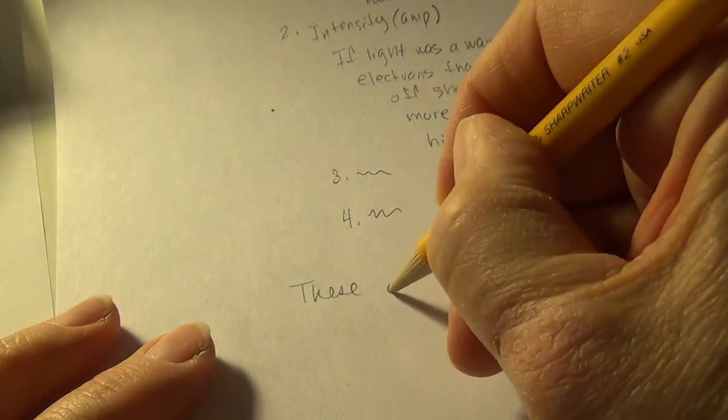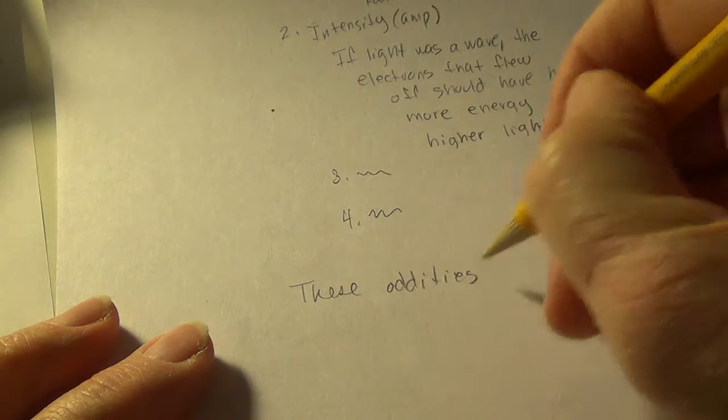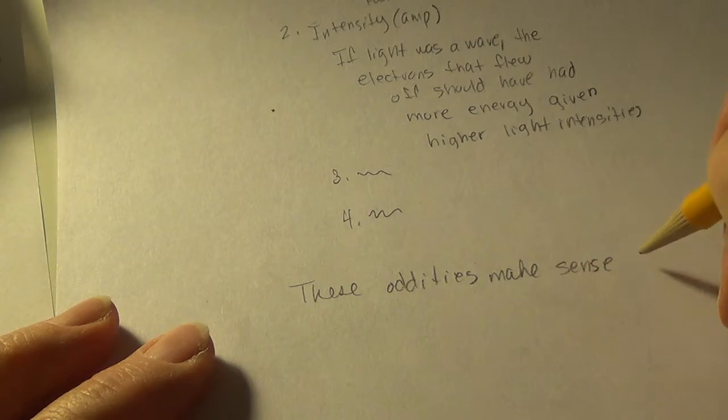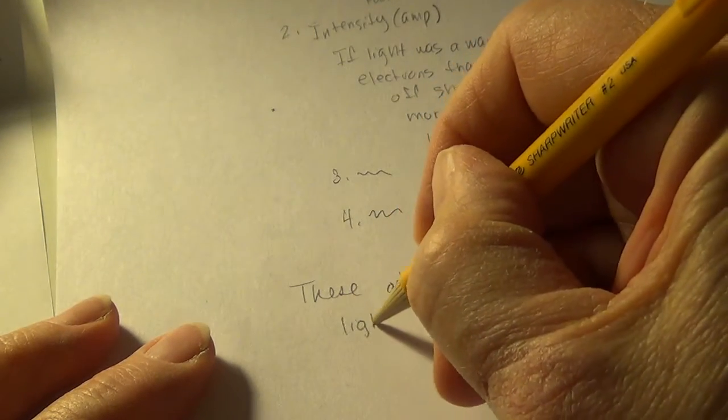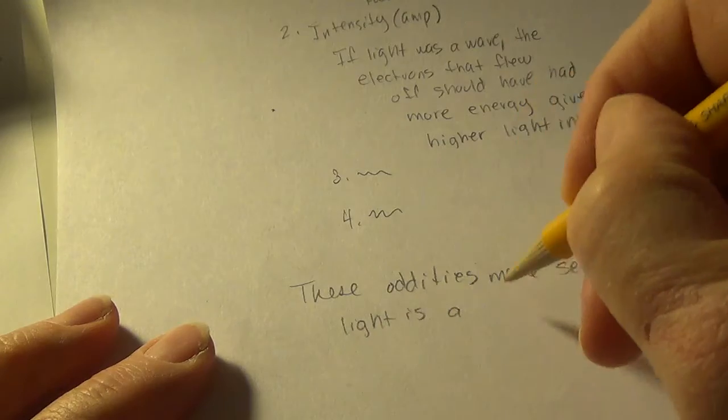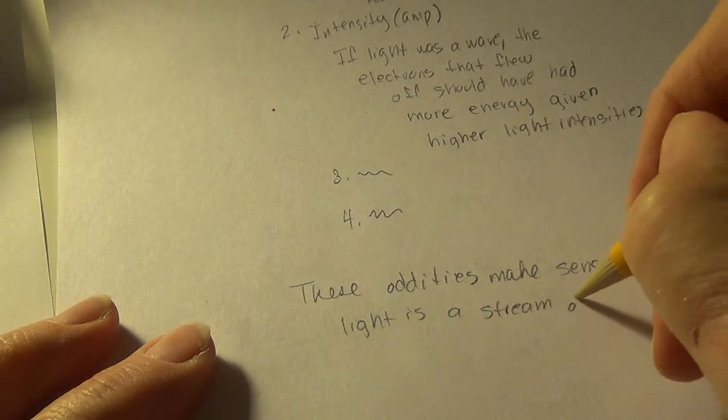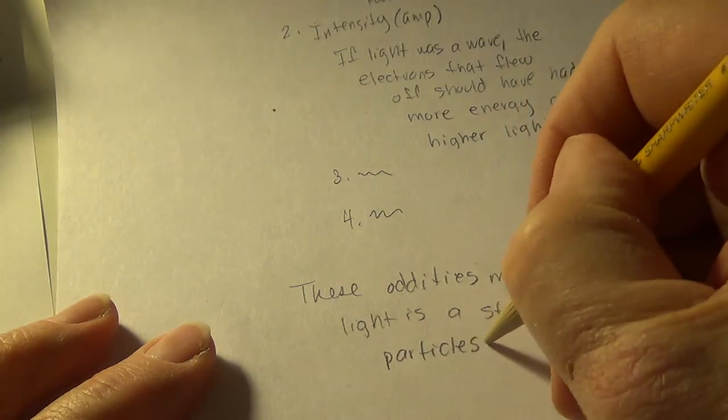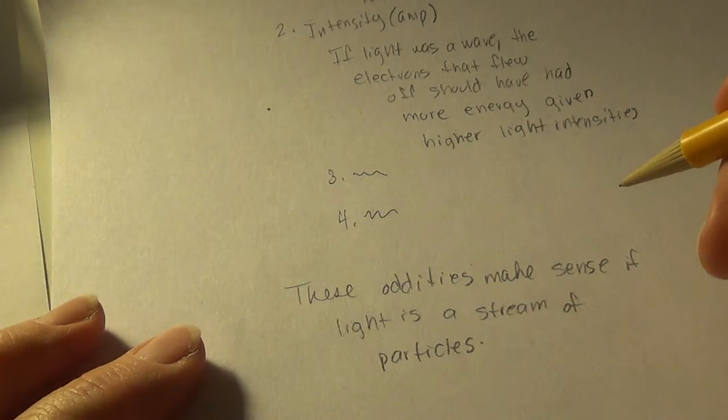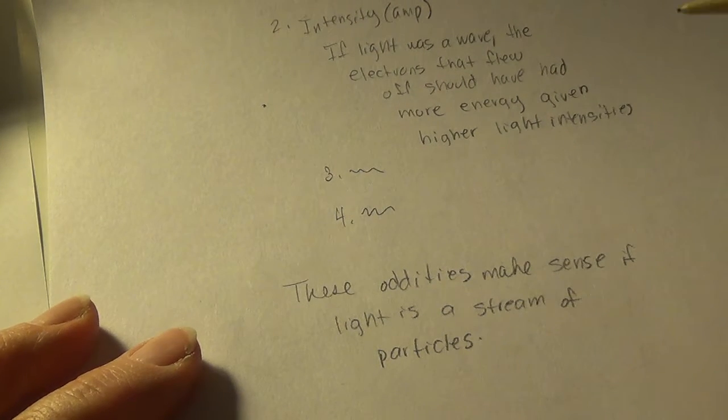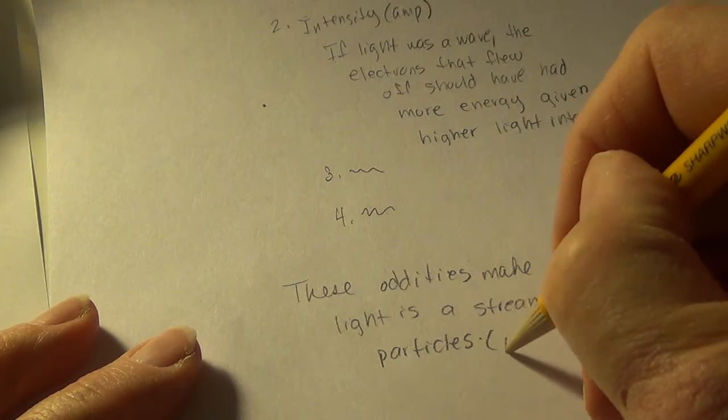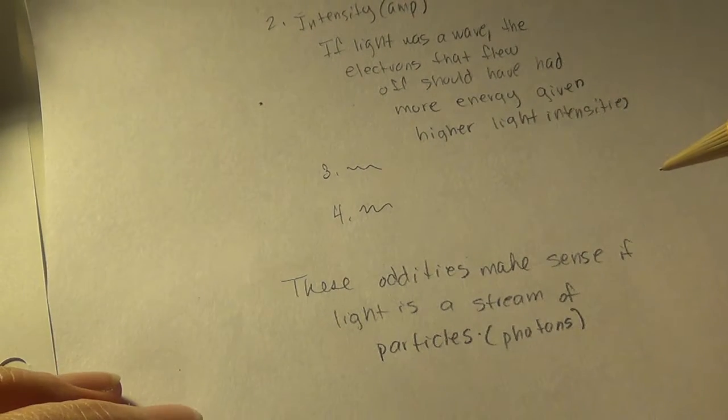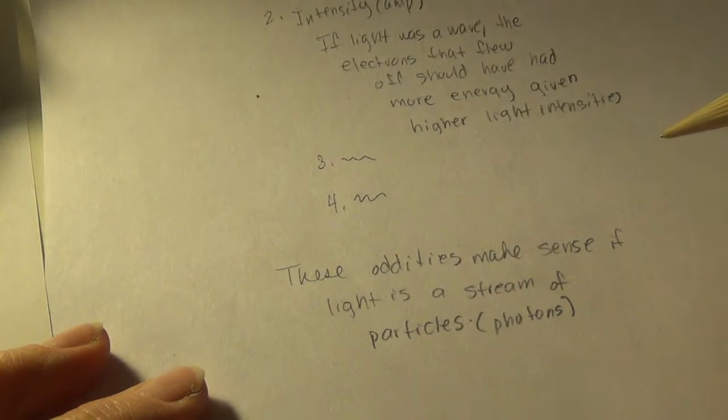So, these four oddities actually make sense if light is not a wave but a stream of particles. These oddities make sense if light is a stream of particles. And, that's what we're going to say that light is under this viewpoint. And, we call those particles photons.